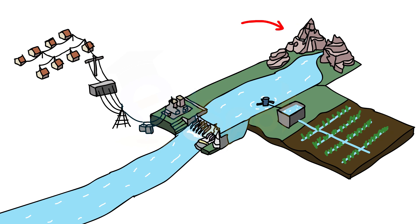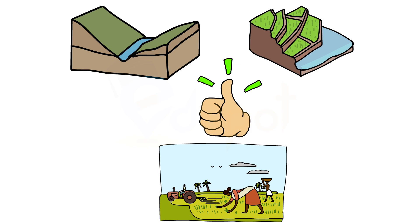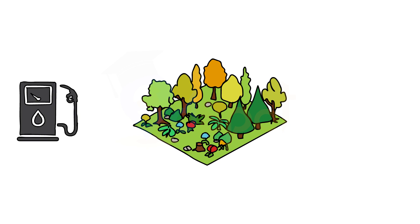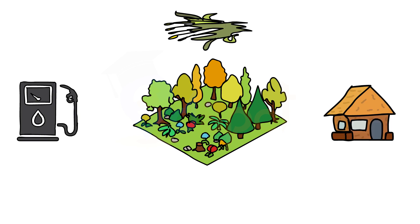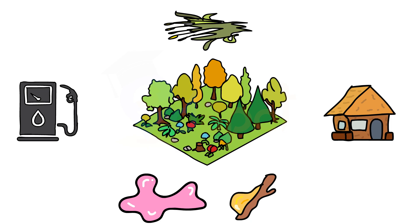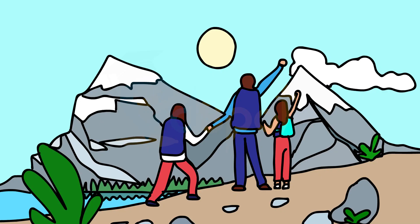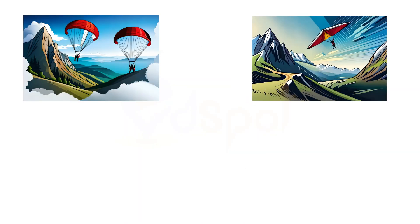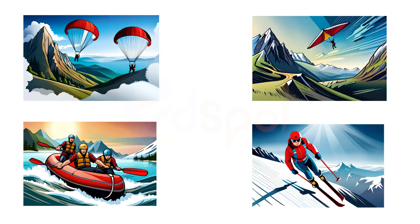Water from the mountains is also used for irrigation and generation of hydroelectricity. The river valleys and the terraces are ideal for cultivation of crops. Mountains have a rich variety of flora and fauna. The forests provide fuel, fodder, shelter, and other products like gum and resins. Mountains also provide an idyllic site for tourists.